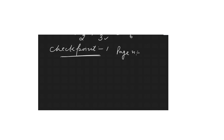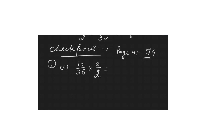Now, checkpoint one, page number 74. Question one says: write two equivalent fractions of each of the following fractions. The teacher has randomly selected question one, part c: 10/35. You have to find two equivalent fractions by multiplying the same number to both numerator and denominator.